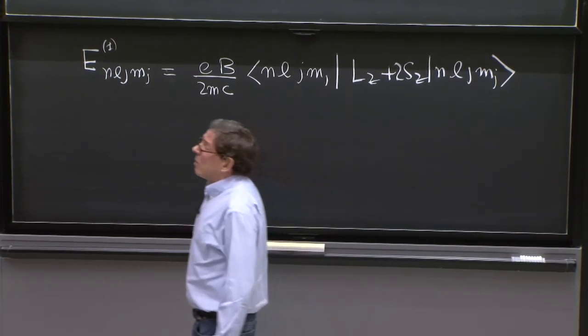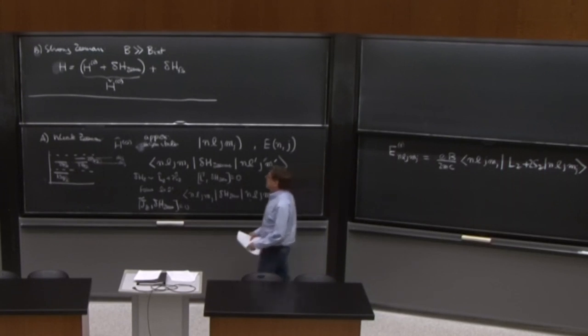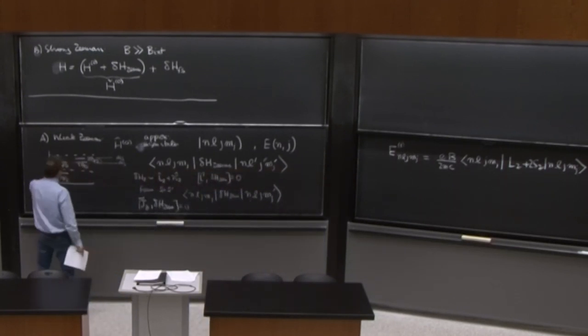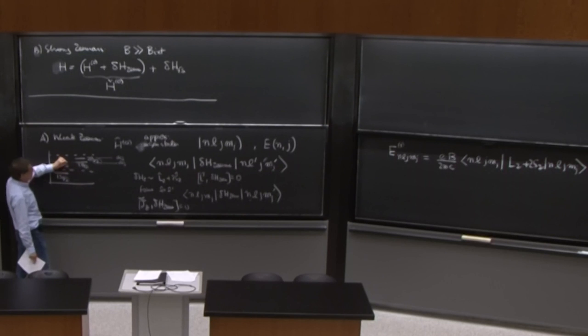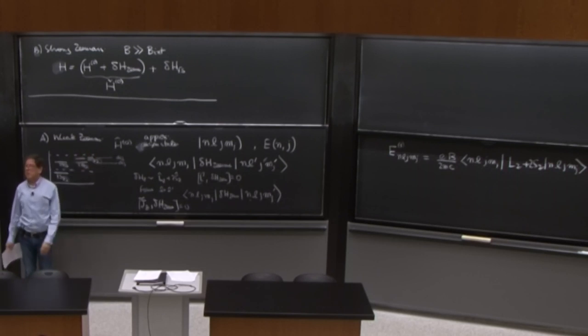So basically, what's going to happen, as you can see here, is that the things don't mix. Everything is diagonal. So these two levels are going to split. These two levels are going to split. These four levels are going to split. Everything is going to split here.